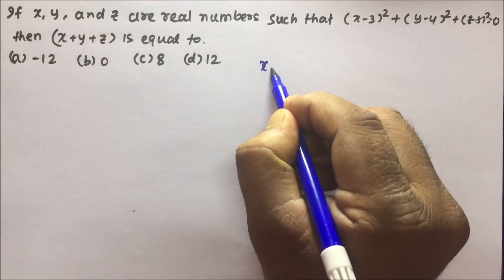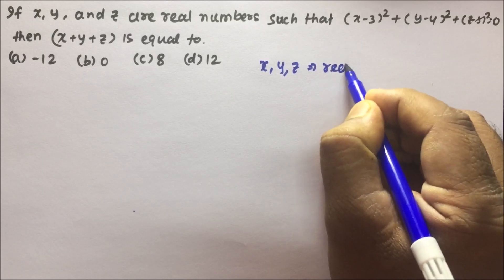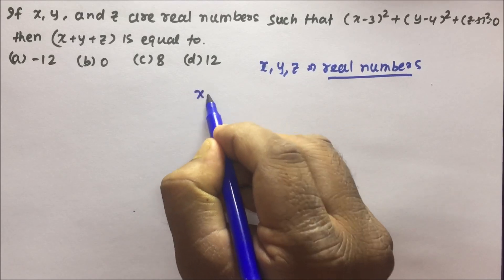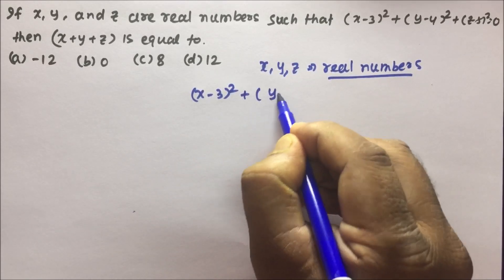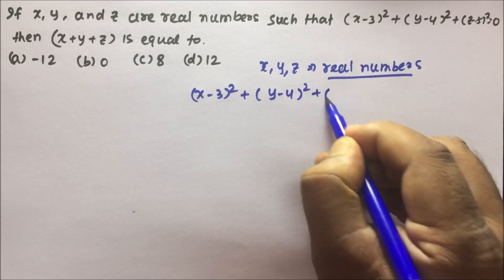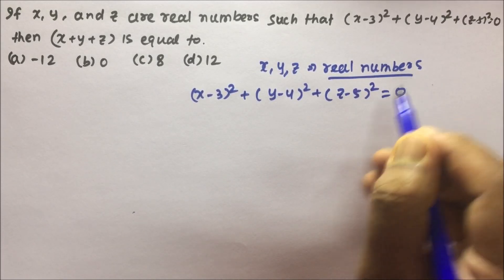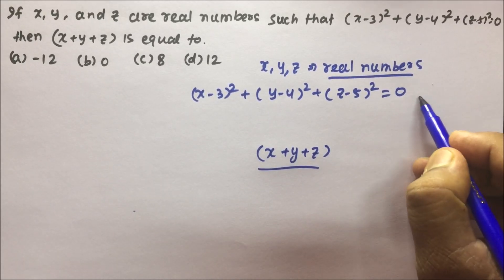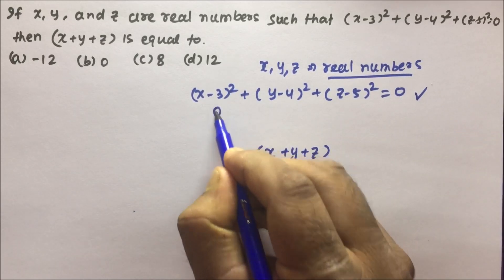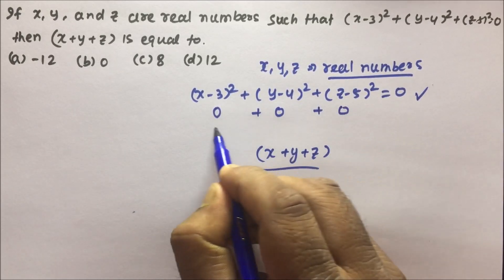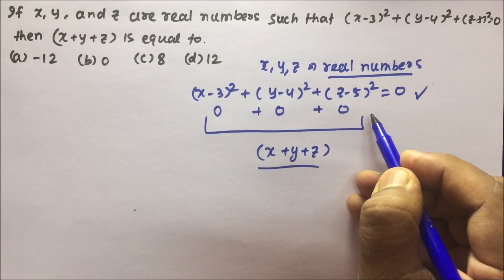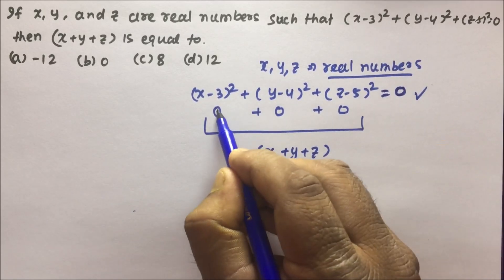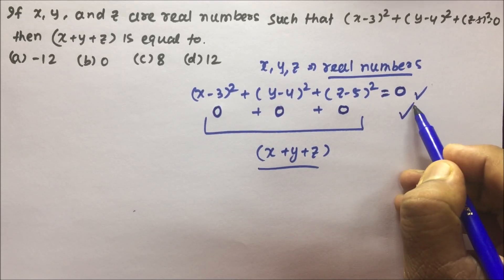Moving on to question number 3, which is a very interesting question. If x, y, and z are real numbers such that (x - 3)² + (y - 4)² + (z - 5)² = 0, find the value of x + y + z. Since this sum of squares equals 0, each and every term must be individually equal to 0 — a very simple concept.